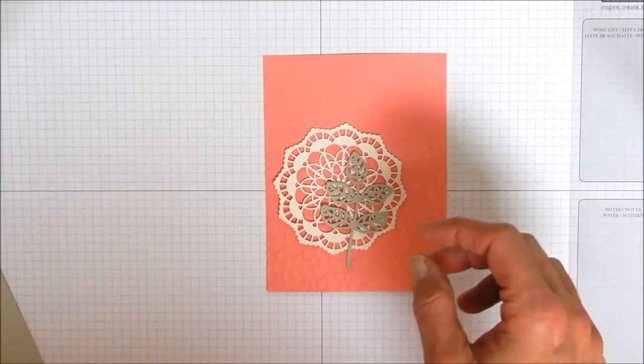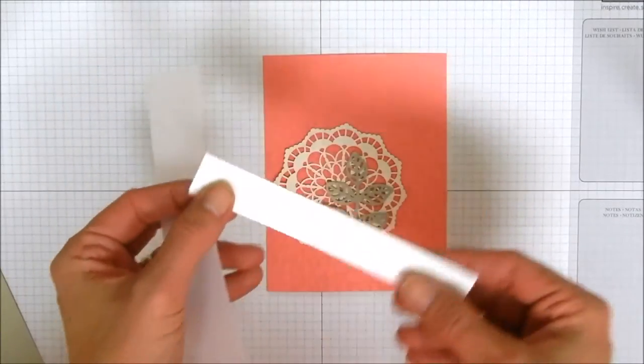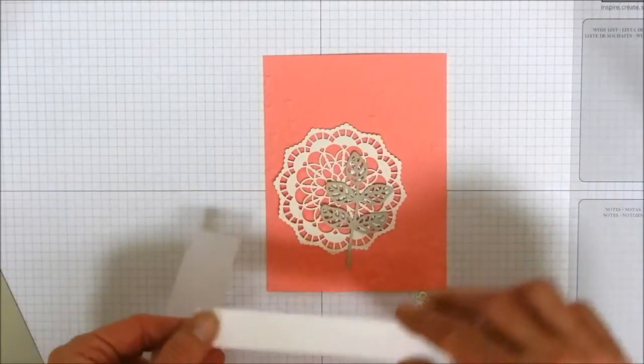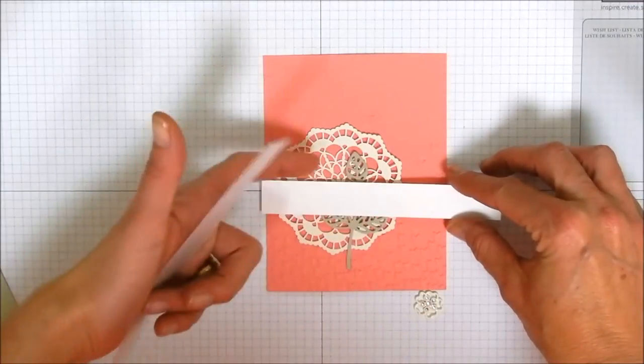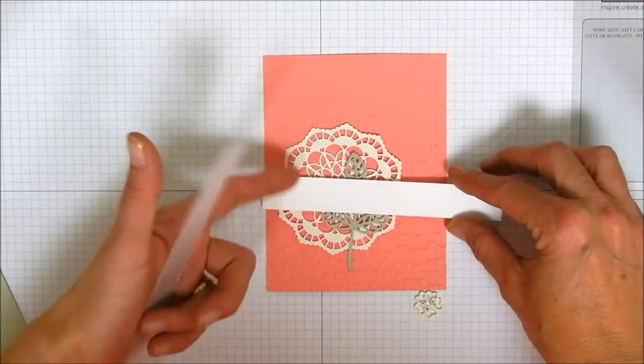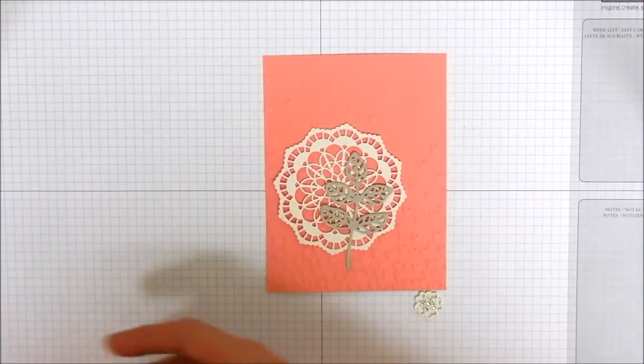And then we just need a one inch strip of vellum available in the annual catalog and a three-quarter inch strip of Whisper White. And I used Whisper White because I wanted this strip to kind of stand out from the very vanilla of the doily piece. All right so let's get started.